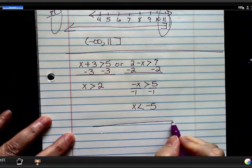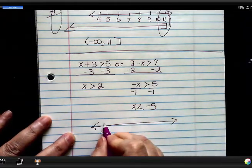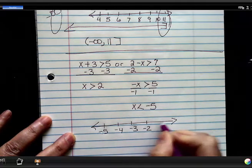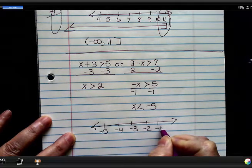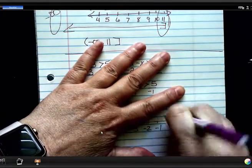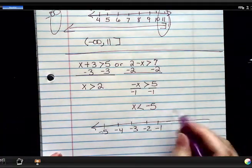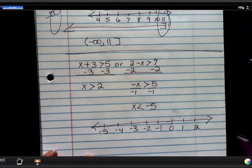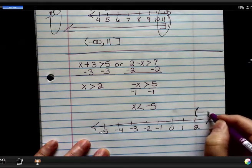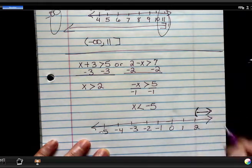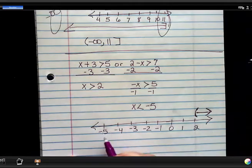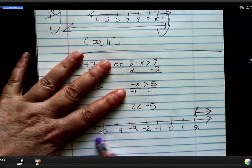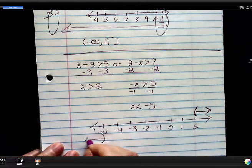So now when I graph these on a number line, make my number line a little bit bigger. X is greater than 2 would look like this here. And x is less than negative 5 would be a bracket. No, parentheses, sorry, going this way.